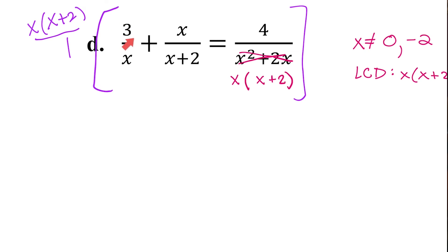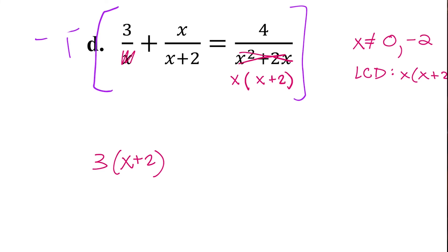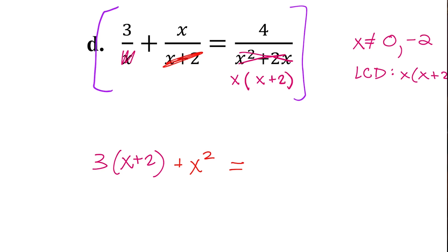So I'm going to multiply this whole equation by x times x plus 2. On the first fraction, the x's will cancel, and we just have 3 times x plus 2. Then on the second fraction, x times x plus 2 times x over x plus 2 — the x plus 2's cancel, and we just have x times x, which is x squared. And on the other side of the equation, x times x plus 2 times 4 over x times x plus 2 — the denominator is exactly what we're multiplying by, so all of that cancels and we're just left with 4.